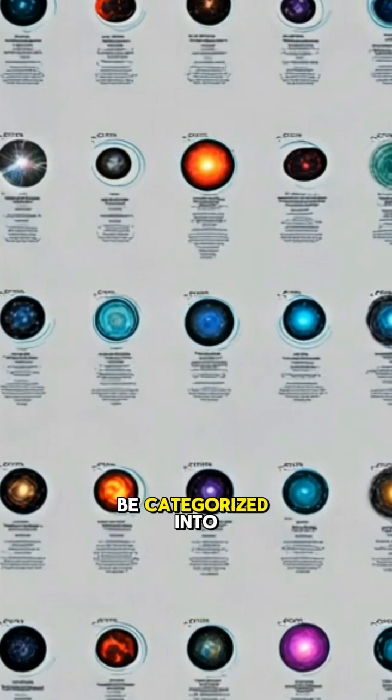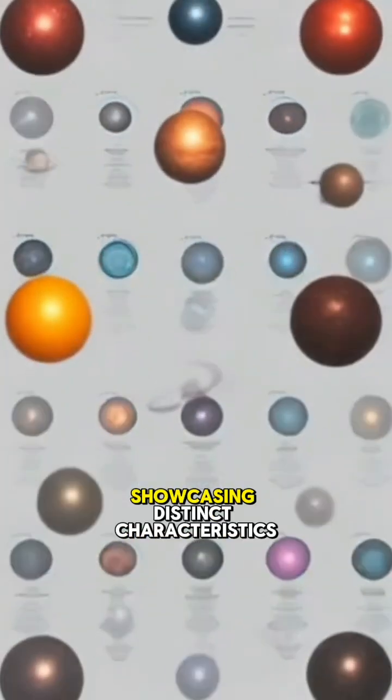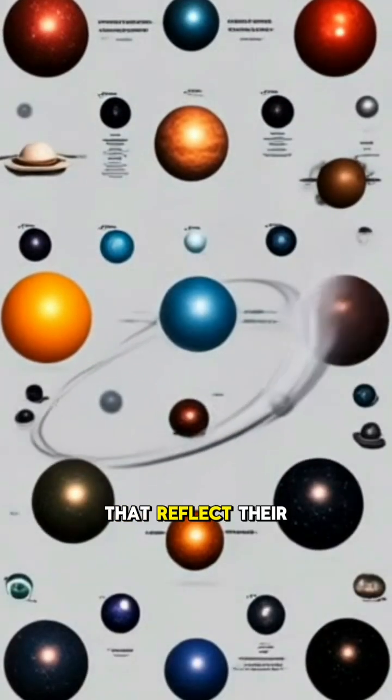Interestingly, galaxies can be categorized into three main types: spiral, elliptical, and irregular. Each type showcases distinct characteristics that reflect their formation processes.